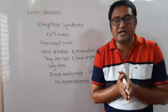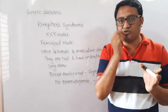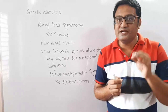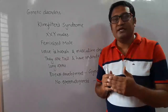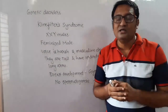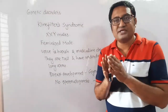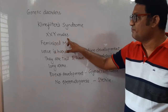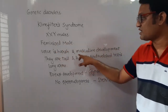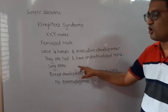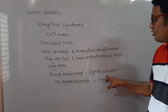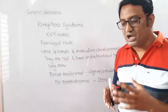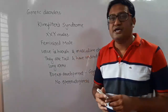Today we have studied genetic disorders, which are of two types: Mendelian disorders and chromosomal disorders. We covered thalassemia — an autosomal inherited recessive disease; Down syndrome — 21st trisomy; Turner syndrome — 44+XO; and Klinefelter syndrome — XXY, a feminized male with harsh voice, masculine development, tall stature, gynecomastia, and sterility due to no spermatogenesis. Our topic of genetic disorders is now complete.